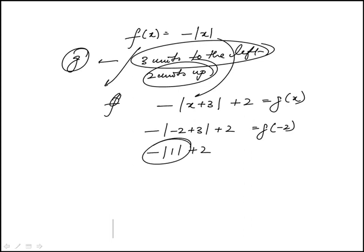And the absolute value of one is one, but I have a minus here, so it's minus one plus two, which is one. So g of minus two is one, which is answer choice D.